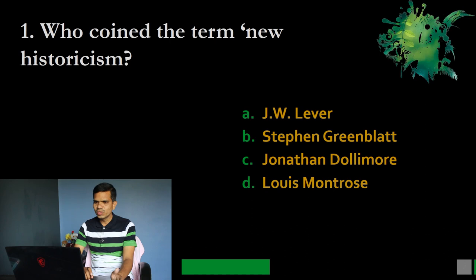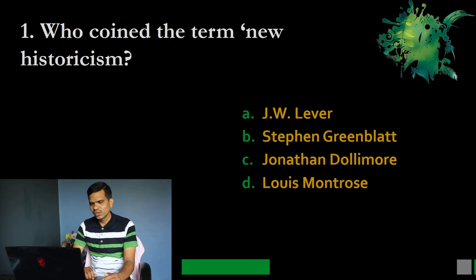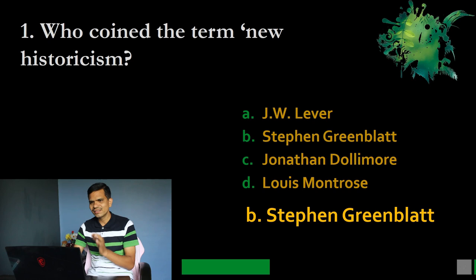Question number 1: Who coined the term new historicism? Options: A. J.W. Lever, B. Stephen Greenblatt, C. Jonathan Dollimore, and D. Louis Montrose. The correct option is B. Stephen Greenblatt coined the term new historicism. This is important in the study of new historicism.